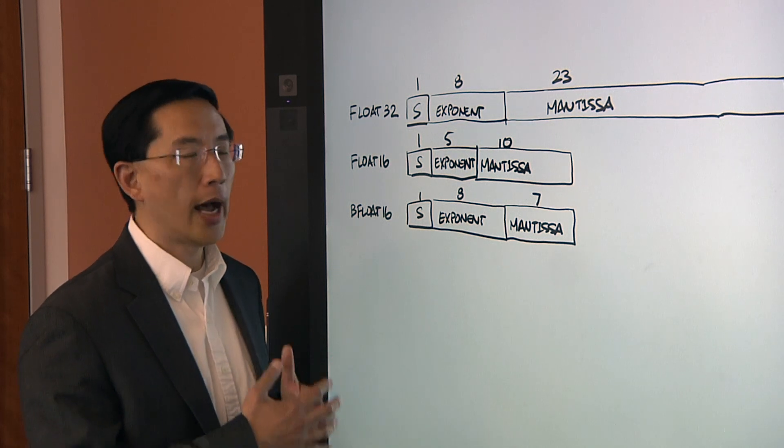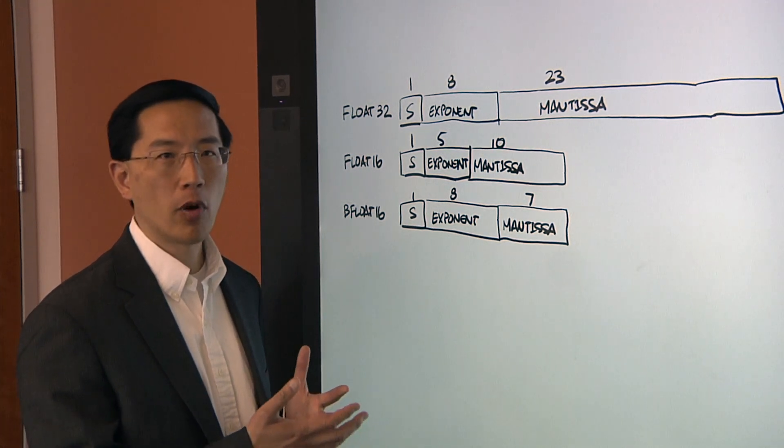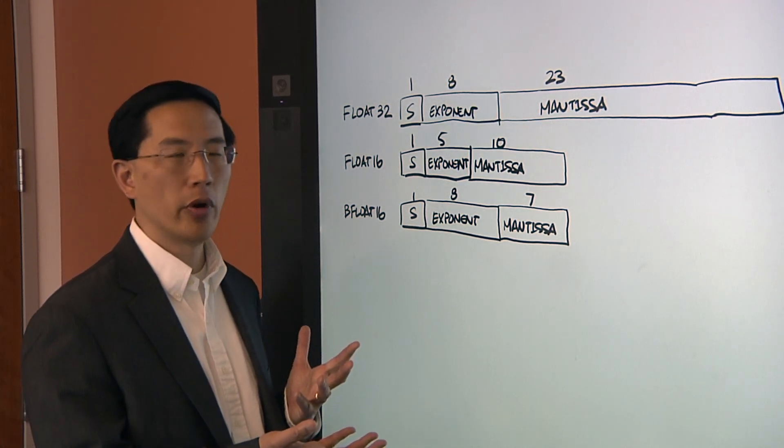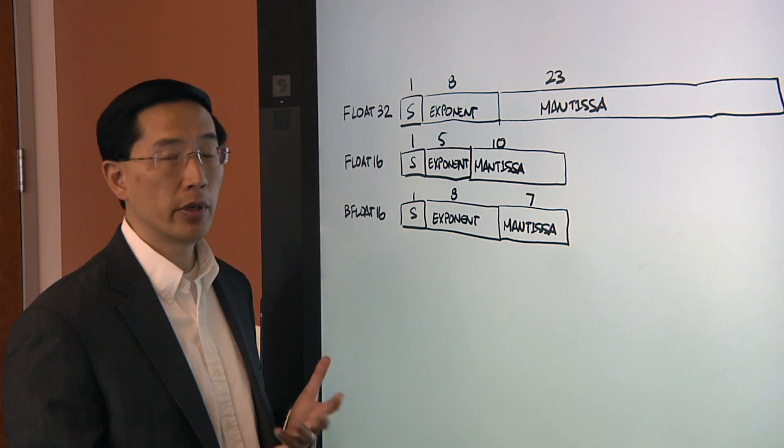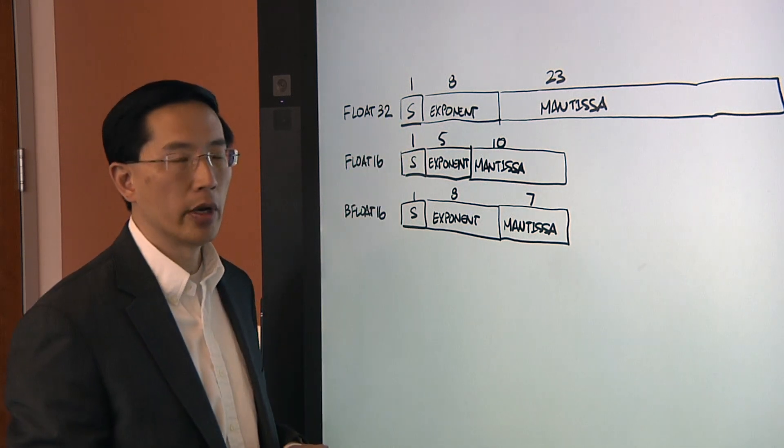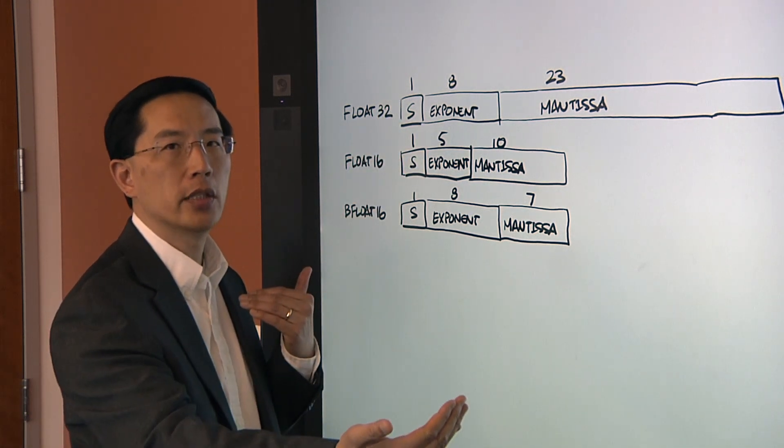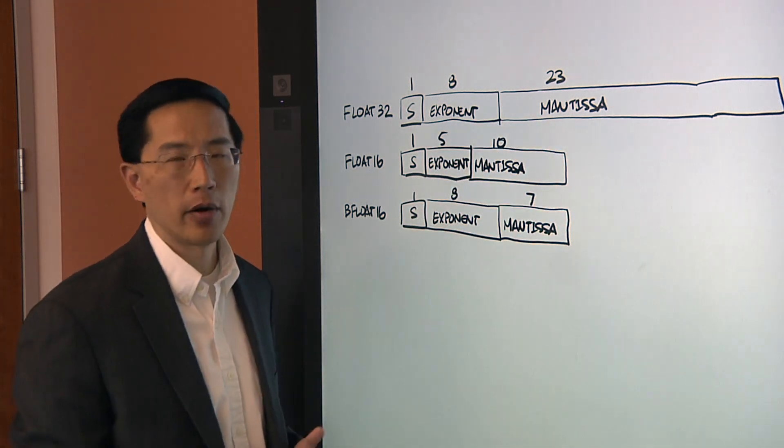It turns out that IEEE, many years ago, defined a very popular type of format called 32-bit floating point numbers. And you see that on the top here. The 32 bits are split up into three components. A sign bit is one of those. Eight bits for exponent, which describe a range that the numbers cover. And a 23-bit mantissa, which is the fractional part of the number.